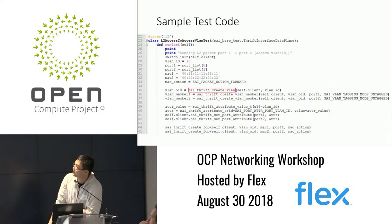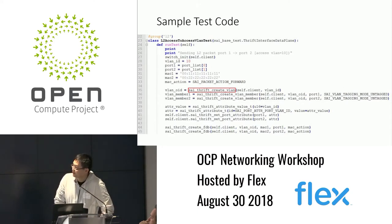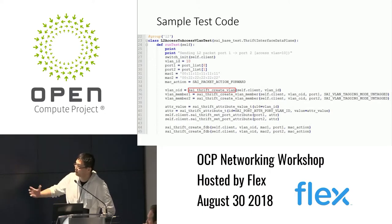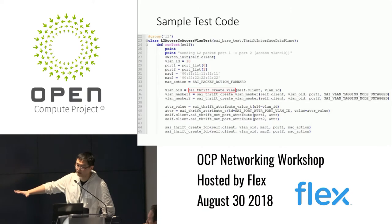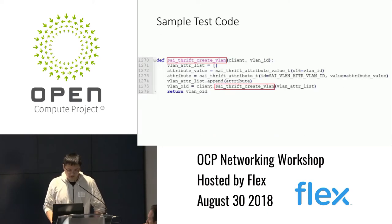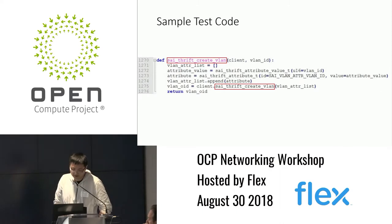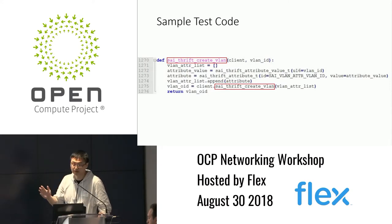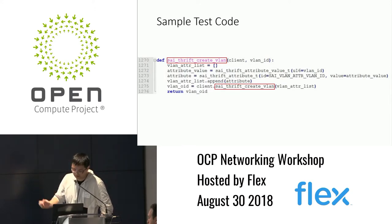In this first-part example, what we are doing is creating a VLAN and creating a bunch of VLAN members using the SAI Thrift API. This is Python code running on the host. Underneath, the SAI Thrift create-VLAN function is basically a wrapper around the client's Thrift function — it passes a list of attributes to the RPC API.